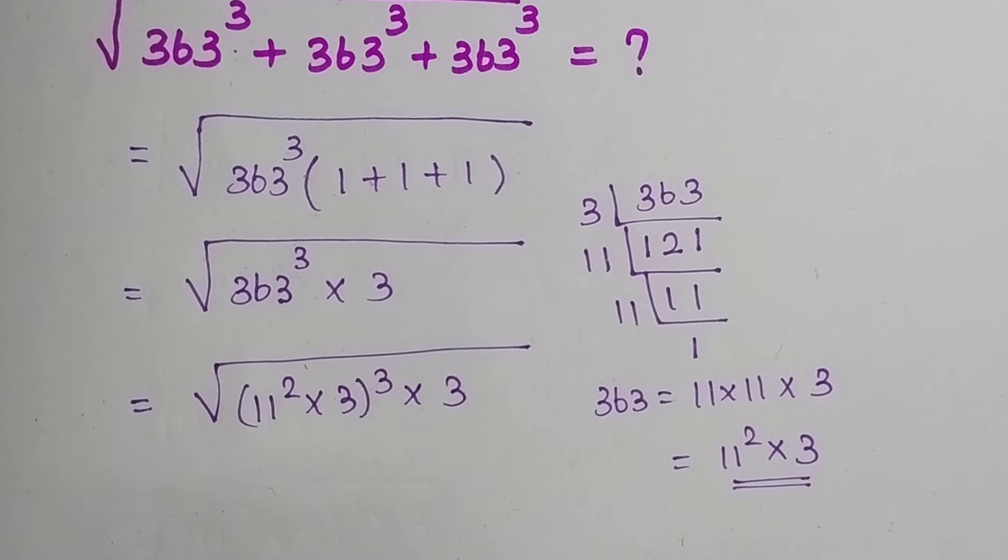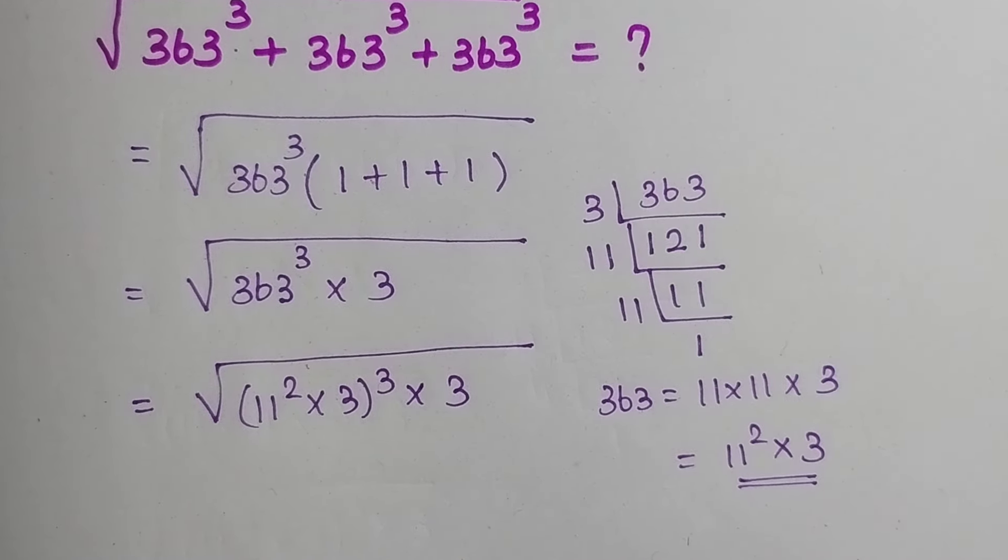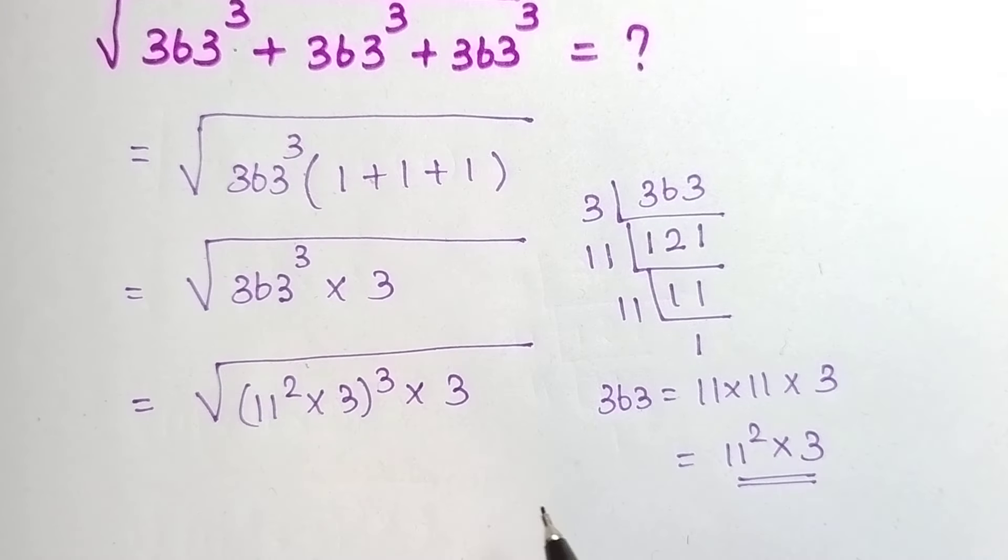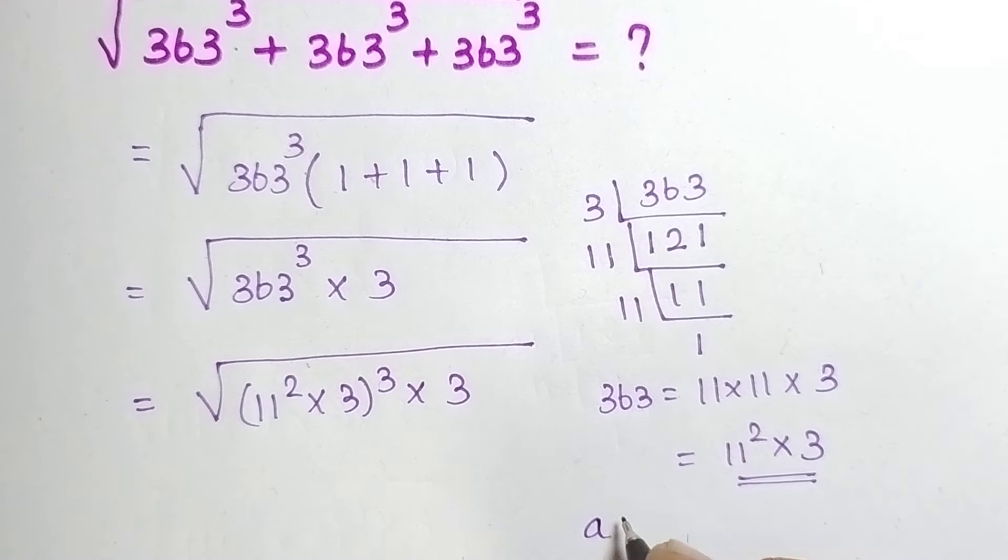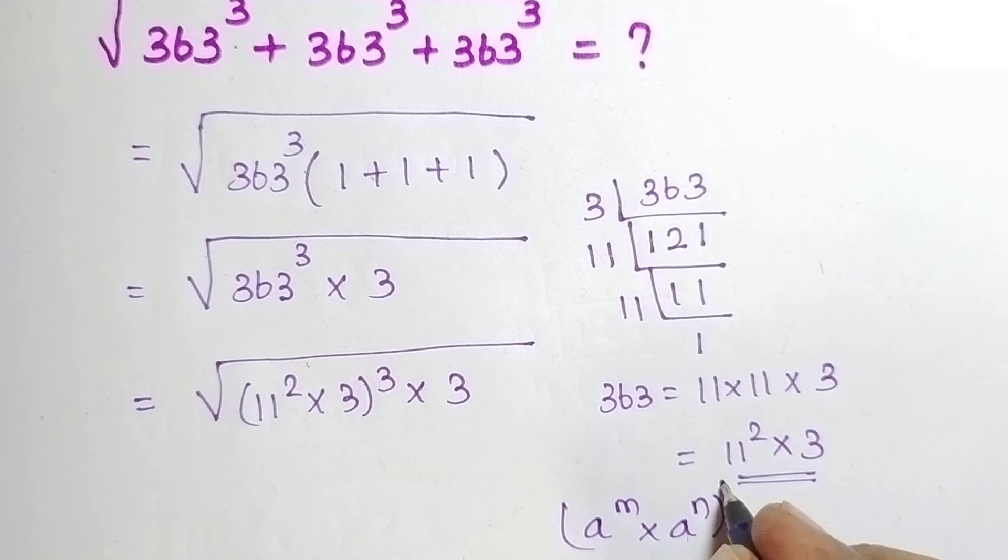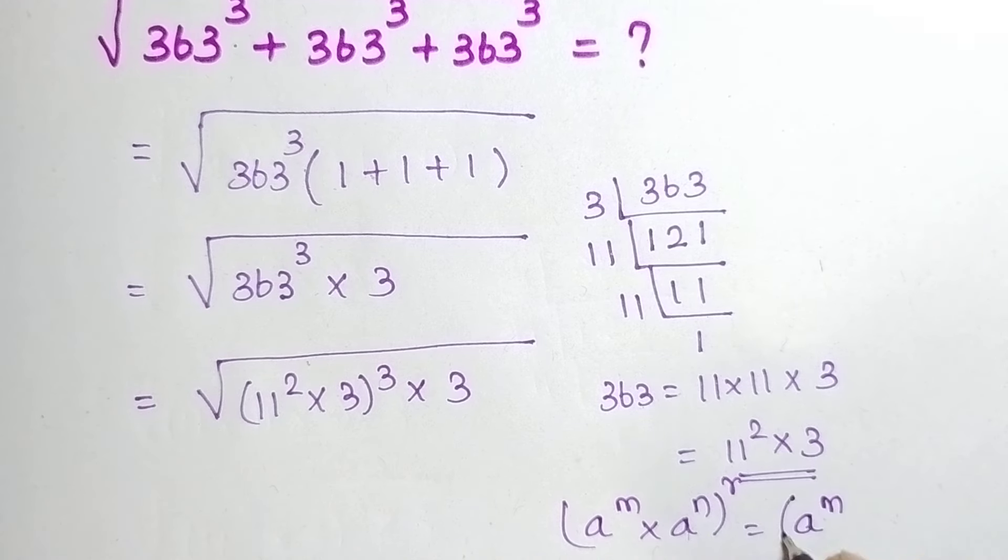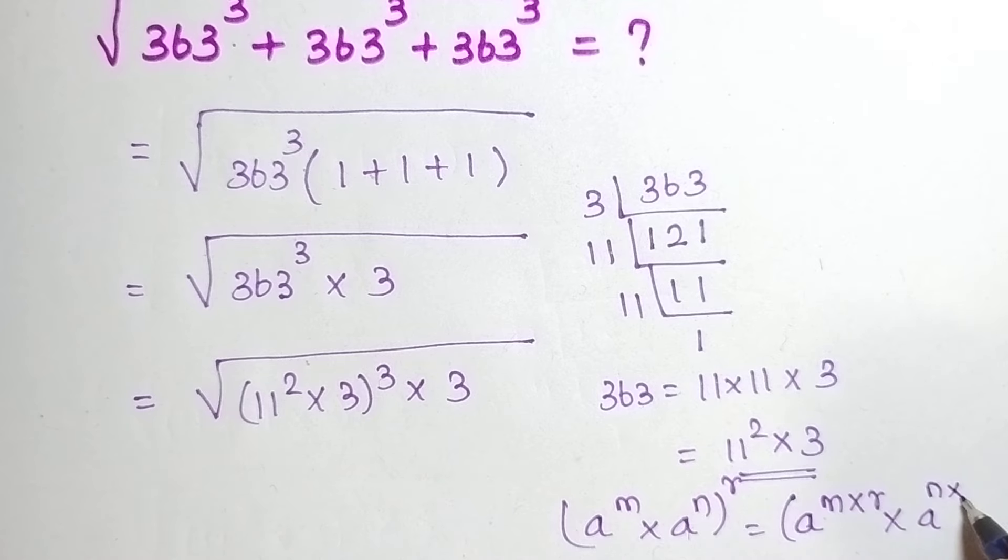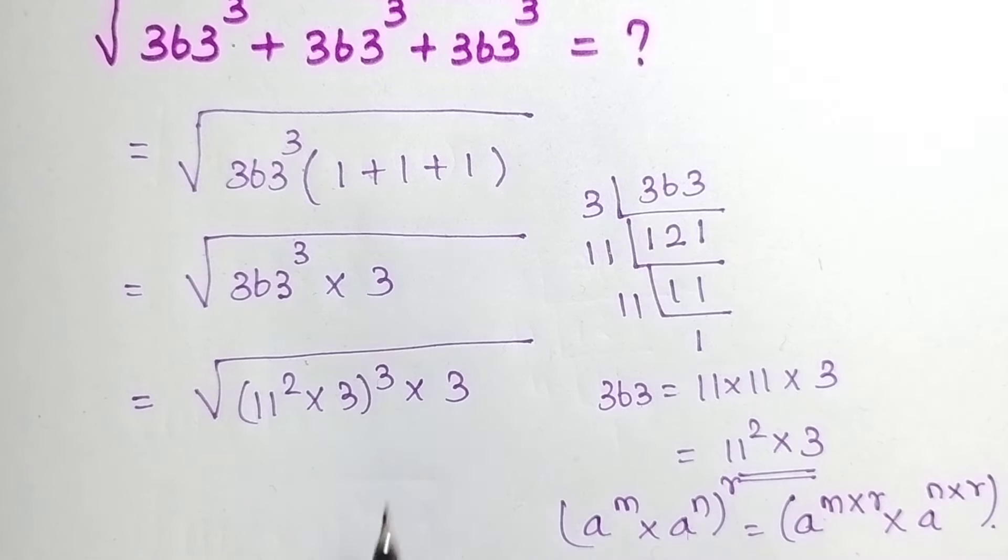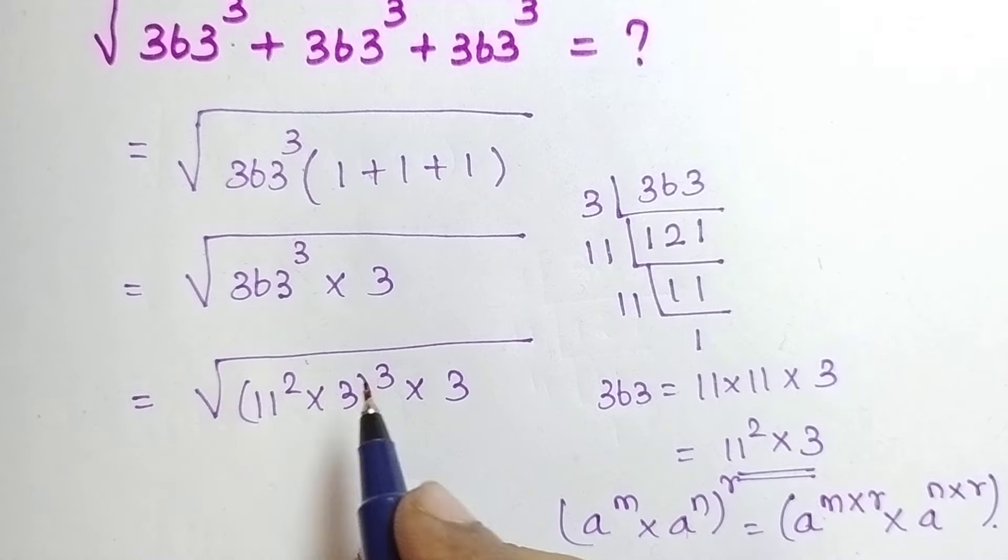Square root of, what is here? So, we know our rule, that is, we can able to write A power M into A power N the whole power R can be written as A power M into R into A power N into R. We can able to powering in each term separately, that's it.